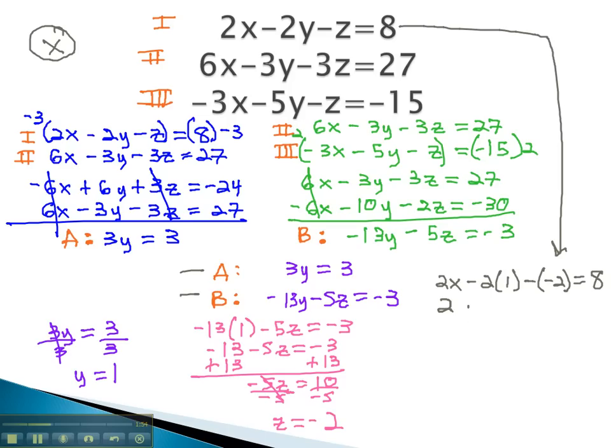This gives us 2x minus 2 plus 2 equals 8. Combining like terms, the 2's subtract out, and we have 2x equals 8. Dividing by 2, we're left with x equals 4.